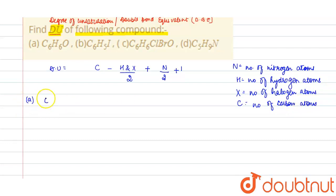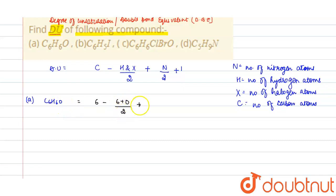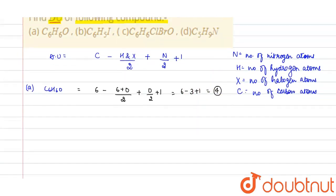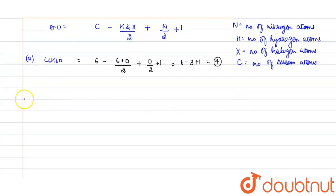Compound A given is C6H6O. Here six carbon atoms are present. So: six minus (six hydrogen atoms plus zero halogen atoms), divided by 2, plus zero nitrogen atoms divided by 2, plus 1. Calculating: six minus three plus one equals four. So the degree of unsaturation for the first compound is four.